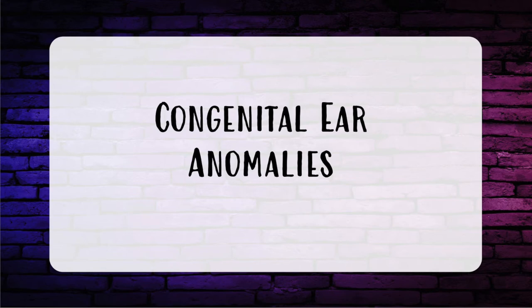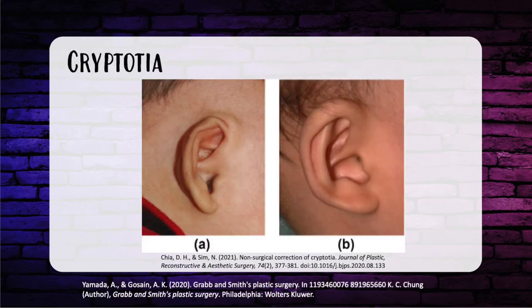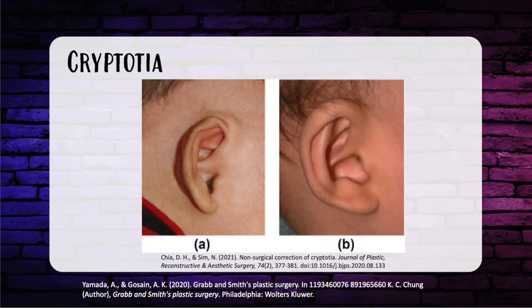Let's talk about congenital ear anomalies, starting with cryptotia or pocket ear. It's common among Asians. With this anomaly, the upper part of the ear is adherent to the scalp — the cartilage is there, but the superior helical rim and scapha are buried under the skin in a pocket. When you place the ear under traction, the upper pole cartilage becomes visible. This deformity is caused by an anomaly of the intrinsic oblique and transverse auricular muscles. Surgical treatment requires release from the pocket and resurfacing of the posterior retroauricular defect.